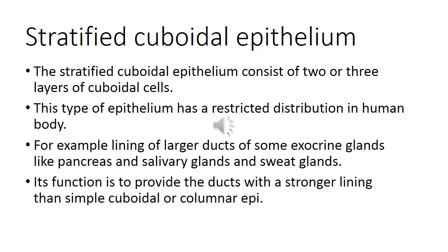Now coming over to the second variety of multi-laminar epithelium — stratified cuboidal epithelium. As clear from the name, it consists of two or more layers of cuboidal cells. This type has a restricted distribution in the human body — they line the larger ducts of some exocrine glands, including the pancreas, salivary glands, and sweat glands. The main function is to provide the duct with a stronger lining than simple cuboidal or columnar epithelium.